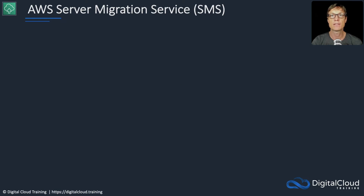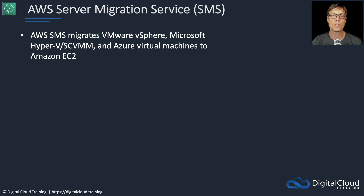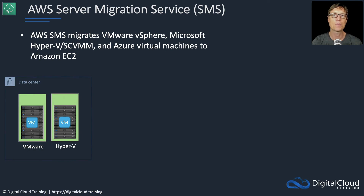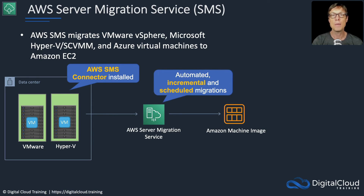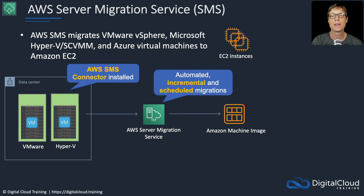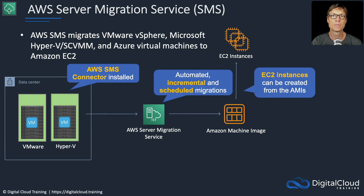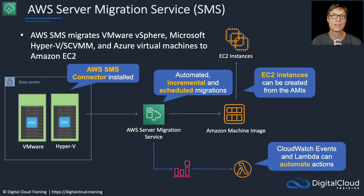The next service is SMS, the Server Migration Service. This will migrate your virtual machines and physical servers — they might be running on VMware, Microsoft Hyper-V, or even Azure virtual machines — and you want to migrate them into Amazon EC2. You have your on-premises data center with virtualized systems running on VMware or Hyper-V, and you install a connector. That connector connects you through to SMS and then into EC2. An Amazon Machine Image is created for each of your virtual machines or physical servers in your on-premises environment. This is an automated, incremental, and scheduled process. Once your on-premises servers are synchronized into an AMI, you can launch EC2 instances from those AMIs. You can even use CloudWatch Events and Lambda to automate certain actions as part of the migration.